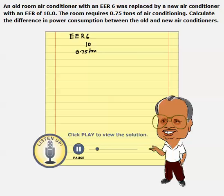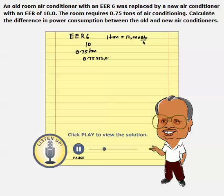You should remember that each ton — one ton of refrigeration or air conditioning — is equal to pulling out 12,000 BTUs every hour. So it is pulling out three quarters of a ton, which is 0.75 times 12,000 BTUs per hour. That is 9,000 BTUs per hour.